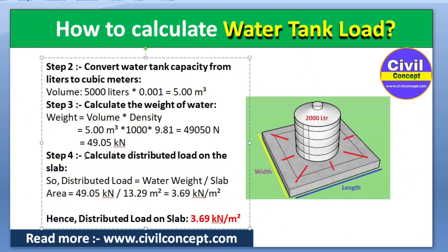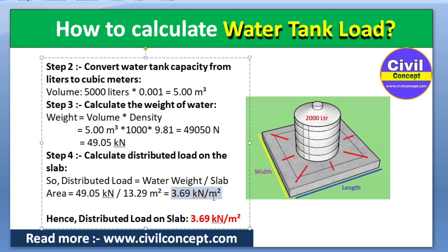In Step 4, we calculate the distributed load on the slab. We distribute the water weight over the slab area. Distributed load = water weight ÷ slab area = 49.05 kN ÷ 13.29 m² = 3.69 kilonewtons per square meter. So the load from this water tank on the slab is 3.69 kN/m².